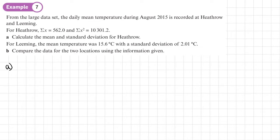Right, so let's write down what we've got. So we've got the sum of X, 562.0. We've got the sum of X squared, which is 10,301.2. What's missing is N. Now, how are we going to find N? It was the daily mean temperature during August 2015. So if it's daily and it's August, there are 31 days in August, so N is 31.